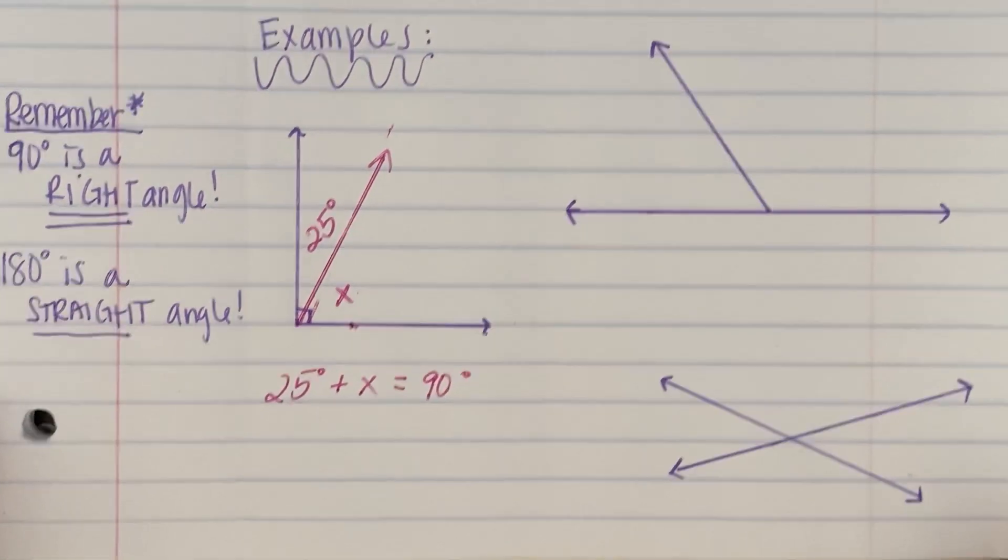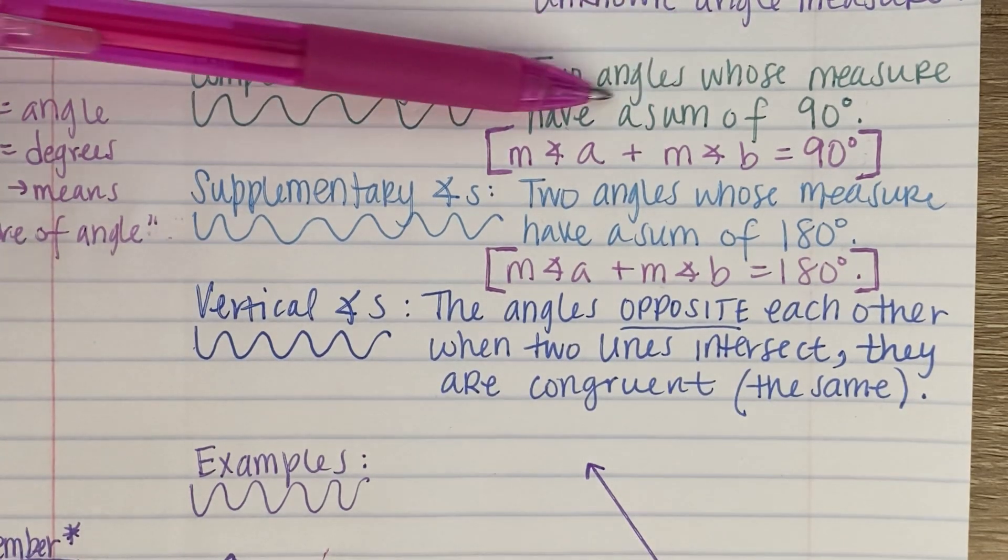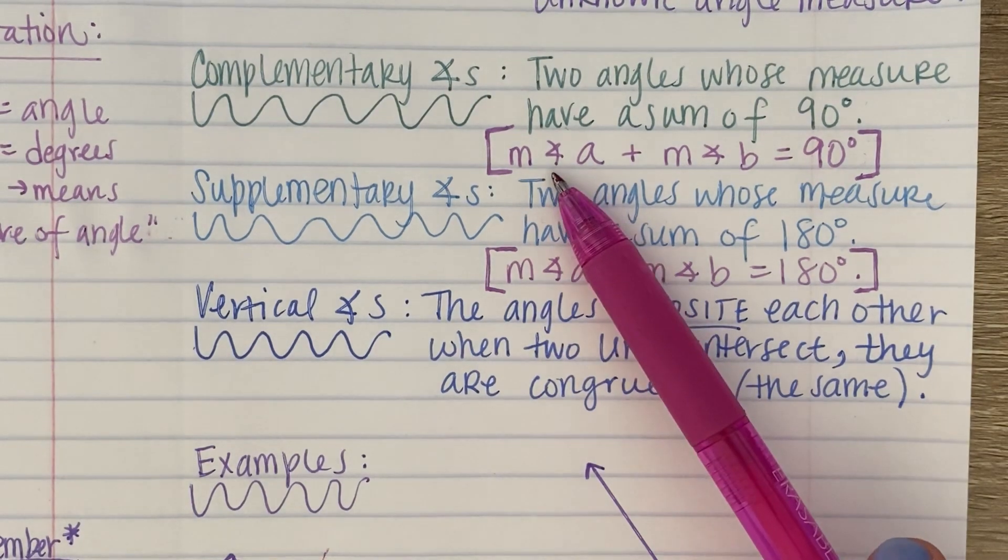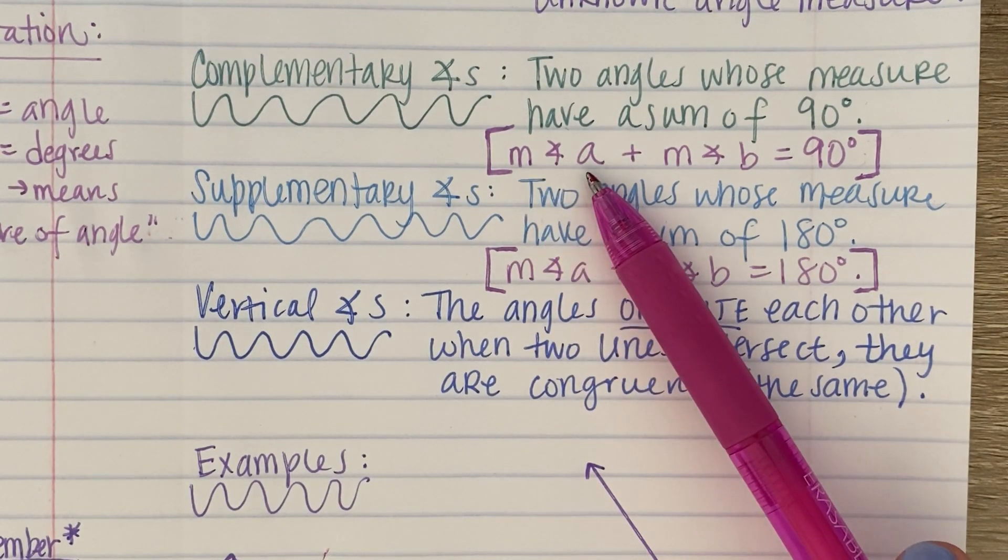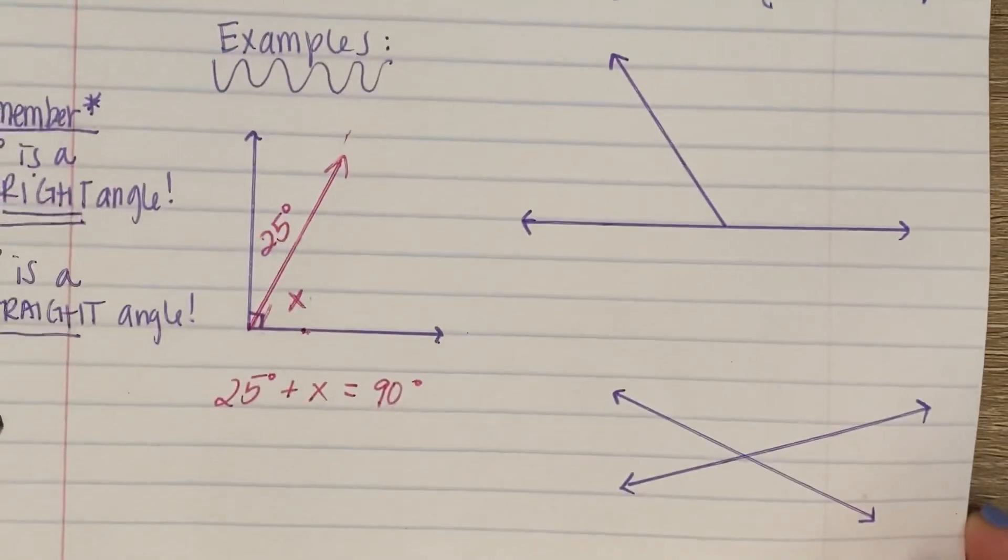is equal to 90 degrees. That's the definition that we have up here from complementary angles. Two angles whose measure have a sum of 90 degrees. And this is how you write your equation. So the measure of your first angle plus the measure of your second angle equals 90 degrees. So that's what we have written over here.